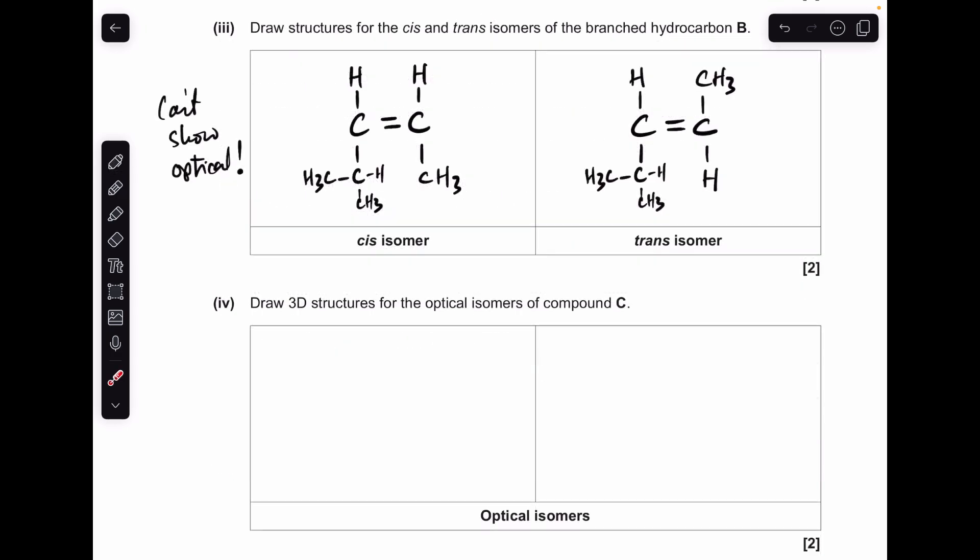Moving on now to the structures of the isomers, starting with B. We're told it can show cis-trans but it can't show optical. The fact that it can show cis-trans means that it's got to have an identical group or atom on each of the carbons of the double bond. So you can see I've gone for hydrogens here. They're on the same side of the double bond on that one, so that's cis, whereas they're on diagonally opposite sides, so that's trans.